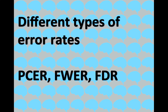Last time we talked about different ways of viewing the data — cluster inference, peak-wise inference, or voxel-wise inference. Today we're going to talk about the different types of error rates that we can control: per comparison error rate, family-wise error rate, and false discovery rate.